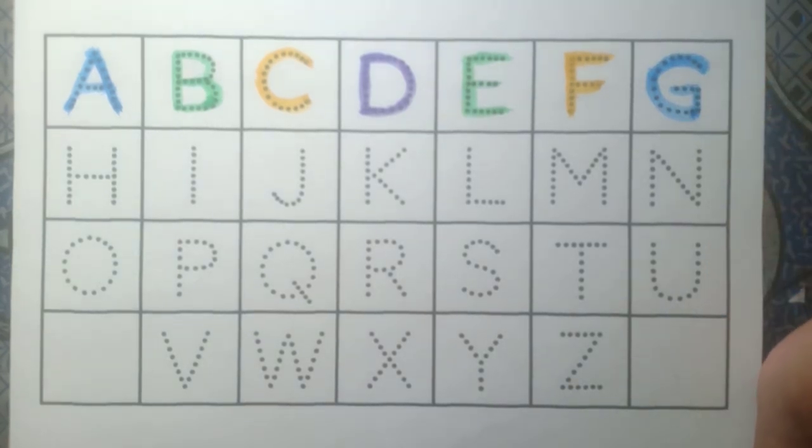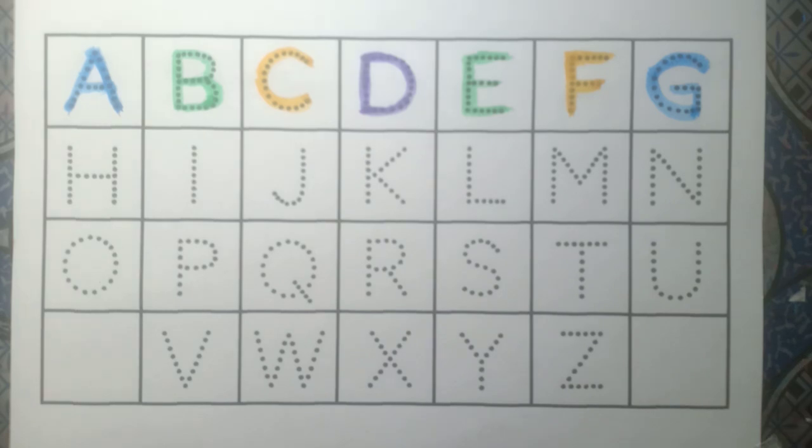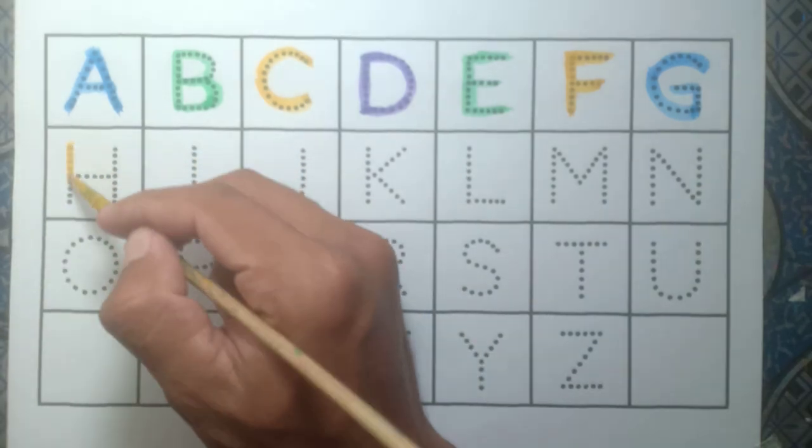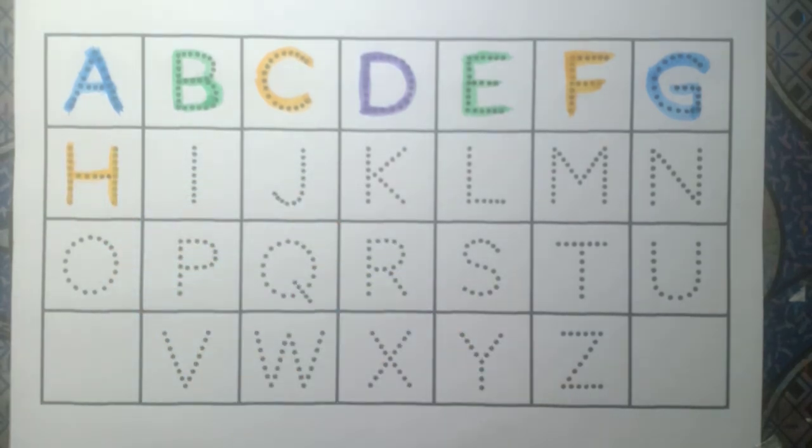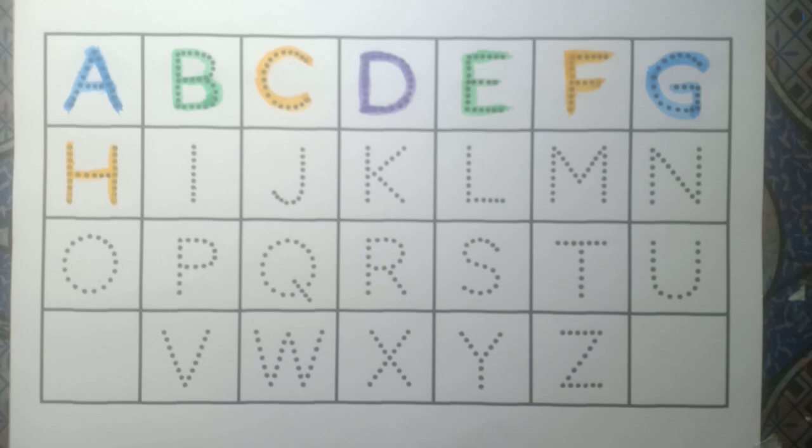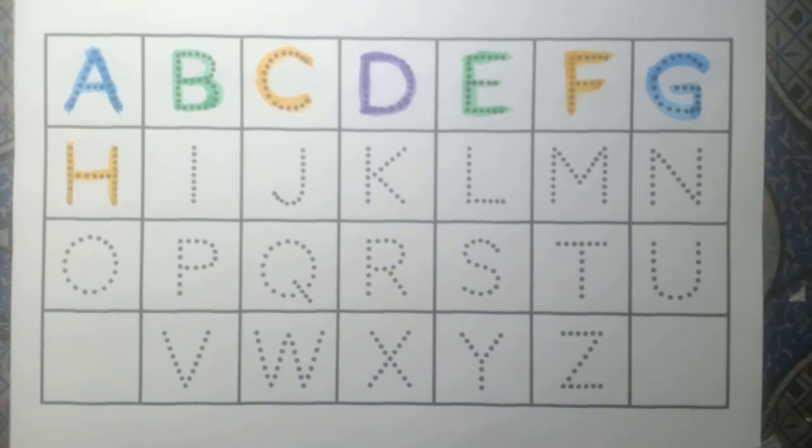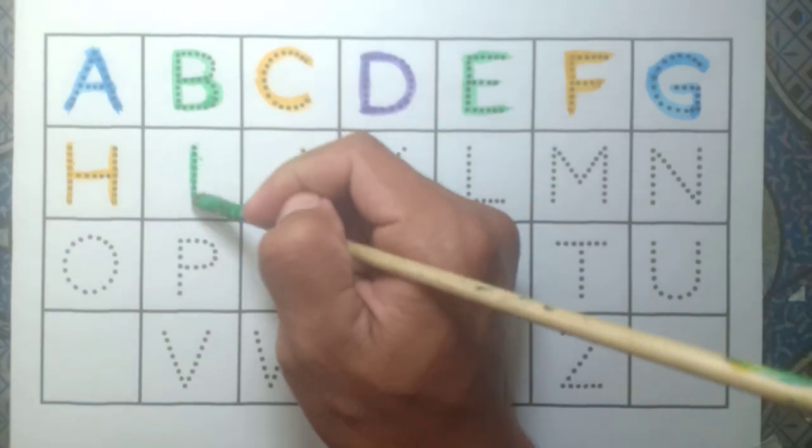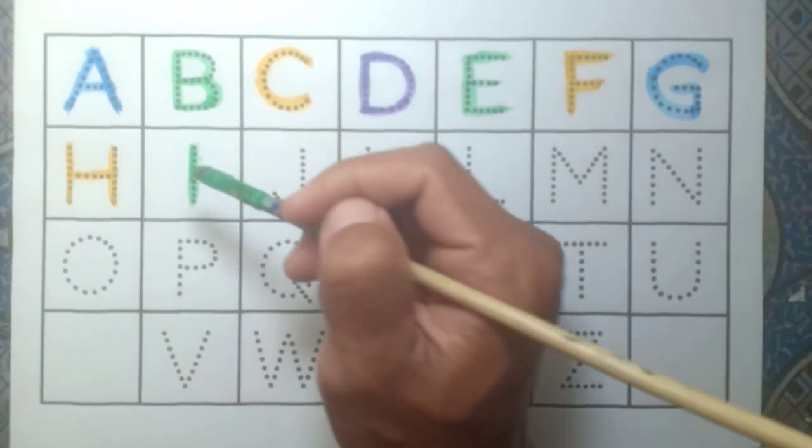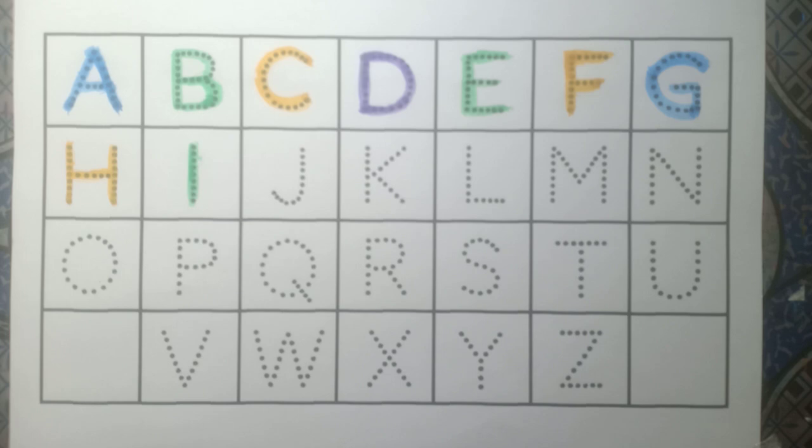G for goat, blue color. And H, H for hand, yellow color. And I, I for ink, green color.